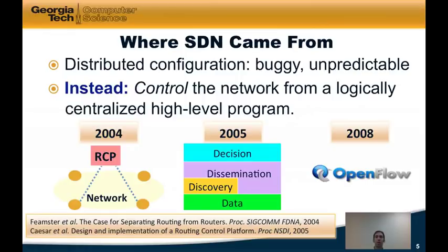So, where did SDN come from? Fundamentally, it was motivated by the observation that distributed network configuration — that is, a network where all the network devices are configured independently in a low-level, device-specific manner — can be very buggy and unpredictable.